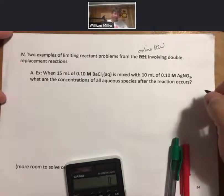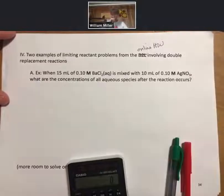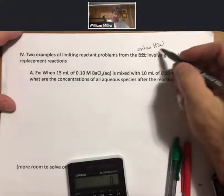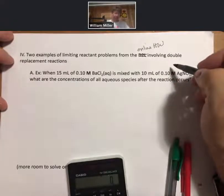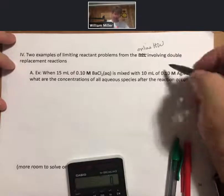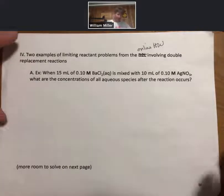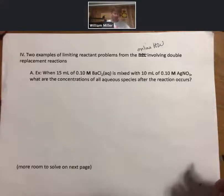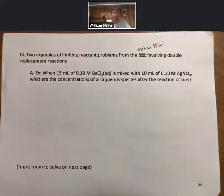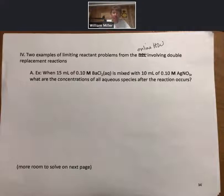Now let's do at least one of the two examples of limiting reactant problems from the online homework involving double replacement reactions. It says: when 15 milliliters of 0.10 molar barium chloride aqueous is mixed with 10 milliliters of 0.10 molar silver nitrate, what are the concentrations of all aqueous species after the reaction occurs?